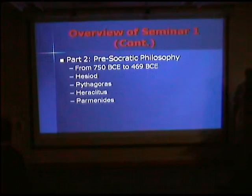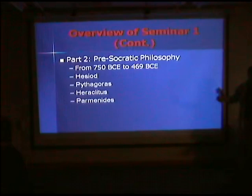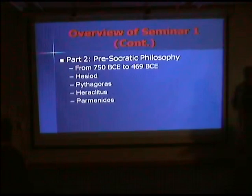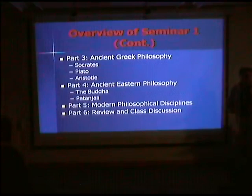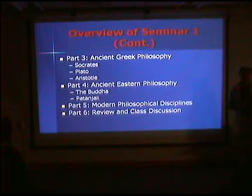In part two, we'll look at pre-Socratic philosophy from about 750 BCE to 469 BCE, when Socrates was born — specifically Hesiod, Pythagoras, Heraclitus, and Parmenides. In part three, ancient Greek philosophy: Socrates, Plato, and Aristotle. Part four covers ancient Eastern philosophy, including material from the Buddha and from yoga. Part five covers modern philosophical disciplines and how we classify philosophy in the modern age. Part six will be a class discussion.